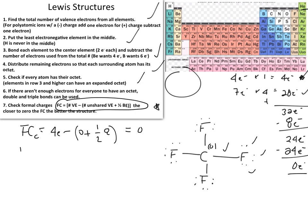The formal charge on fluorine is calculated in a similar way. Fluorine has seven valence electrons. We look at each fluorine individually — not all electrons around all fluorines at once — focusing on a single fluorine at a time.